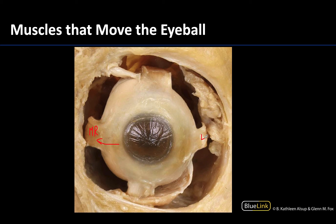The lateral rectus would pull the gaze laterally, or abduct. So these muscles are truly pulling the globe of the eyeball because of their close attachment to the whites of the eyes, or the sclera.